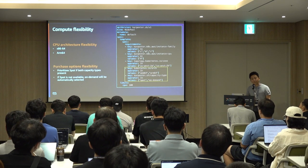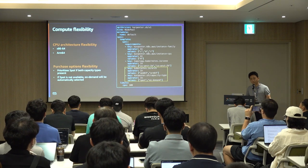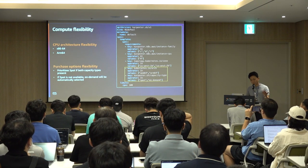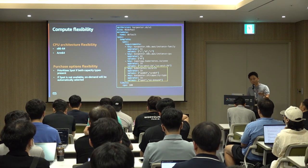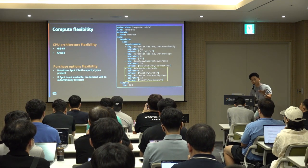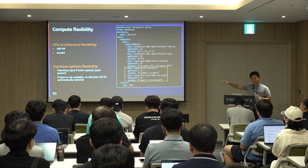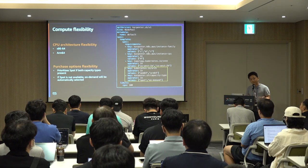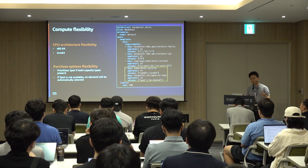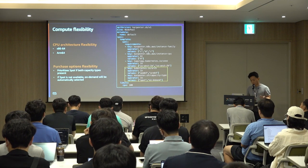You also have flexibility with CPU architecture and purchasing options — either on-demand or spot. When both spot and on-demand are present in a node pool, spot will be automatically prioritized when spot capacity is available. But if spot is not available, on-demand will be automatically picked up.